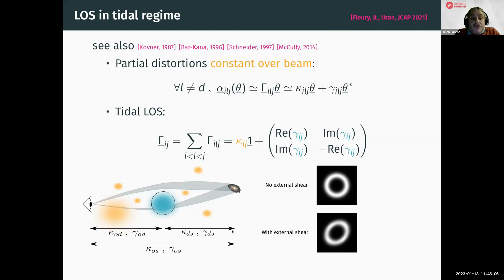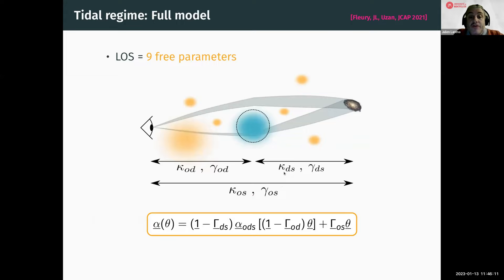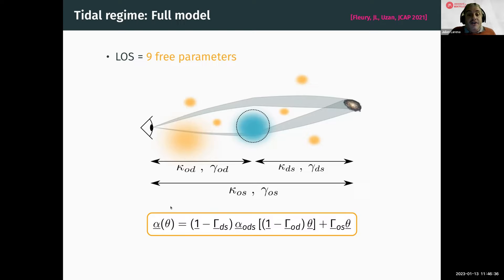This is parameterized by nine free parameters: three convergences — a foreground convergence kappa_OD, a background convergence, and an overall convergence — and similarly three shears: a foreground shear, a background shear, and an overall shear, which are complex numbers, hence the nine free parameters. In that case, the displacement field entering the lens equation takes a very simple form with three matrices encapsulating all effects in the tidal regime.